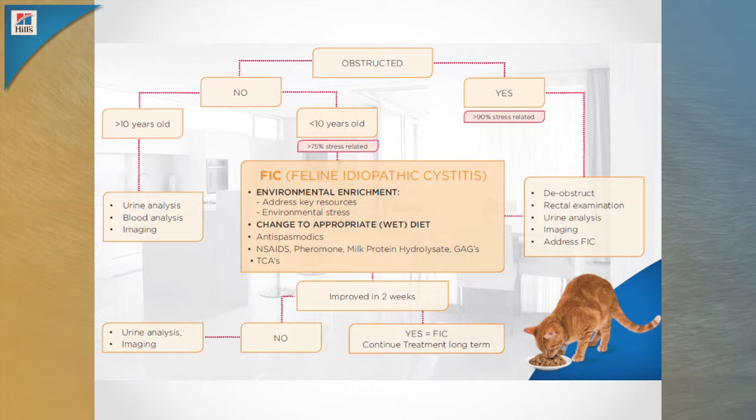The other group we need to consider are the non-obstructed but older cats. Older cats aren't at particular risk of getting urinary problems other than infections, and here infection really can play a role. In the vast majority of cats getting signs of urinary obstruction, less than 5% will have a urinary infection. But in your older cats — older than 10 — 50% will. So they're easy numbers to remember.